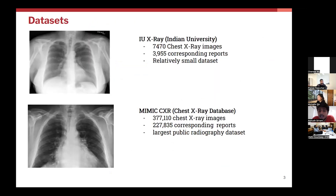The datasets used here are two commonly used datasets: IU X-ray, Indiana University's chest X-ray dataset, and MIMIC-CXR. The IU X-ray is pretty small, with only around 7,400 images and corresponding reports, whereas MIMIC-CXR is the largest publicly available radiography dataset with around 377K images and 200K+ corresponding reports.